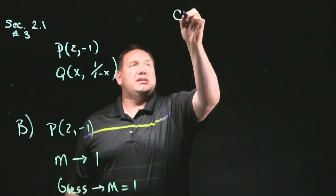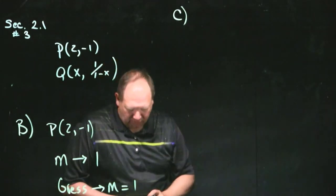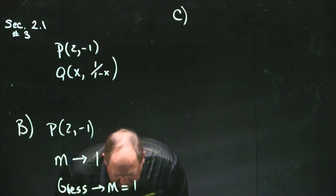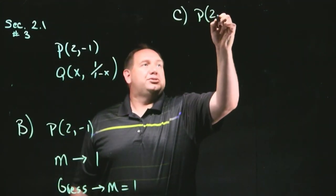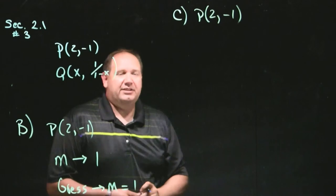So, part c says, find the equation of the tangent line to the curve at p, 2, negative 1. So, find the equation of the line.